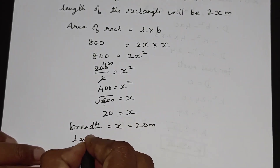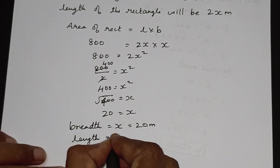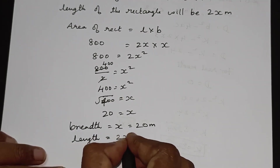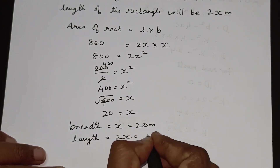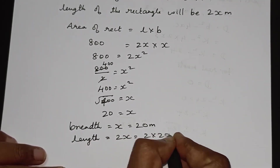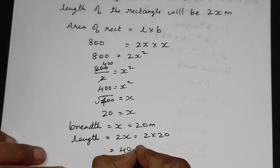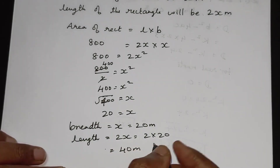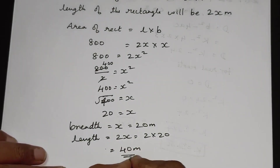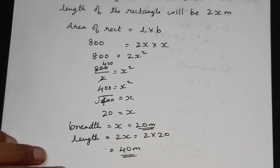x is equal to 20 meters. The length is 2x, so 2 × 20 is equal to 40 meters. This is the answer.